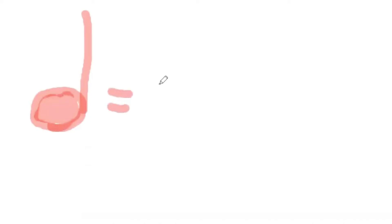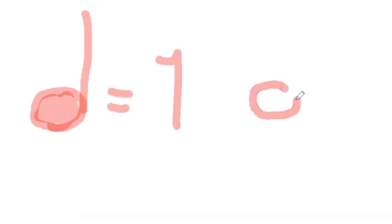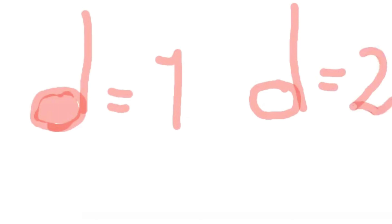And that's our quarter note, and it gets one count. Now let's draw a half note — round, popsicle stick on the right, and no color inside. It gets two counts.